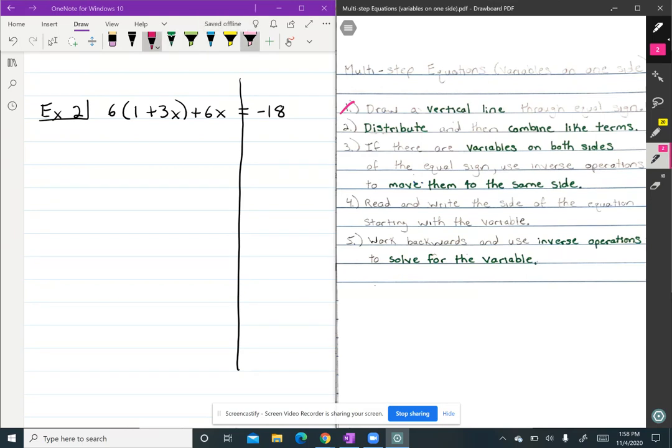Step two says to distribute and then combine like terms. We're looking to see if we have any parentheses with multiple terms inside to see if we have a number in front that we want to distribute. In this case, we do. We're going to multiply six by everything inside the parentheses. We'll take six times one, which will give us six. And then we're going to take six times positive three X, which will give us positive 18 X. And then this positive six just drops down because it's outside of our parentheses, so we do not distribute to it. And then on the right hand side, we bring down negative 18.